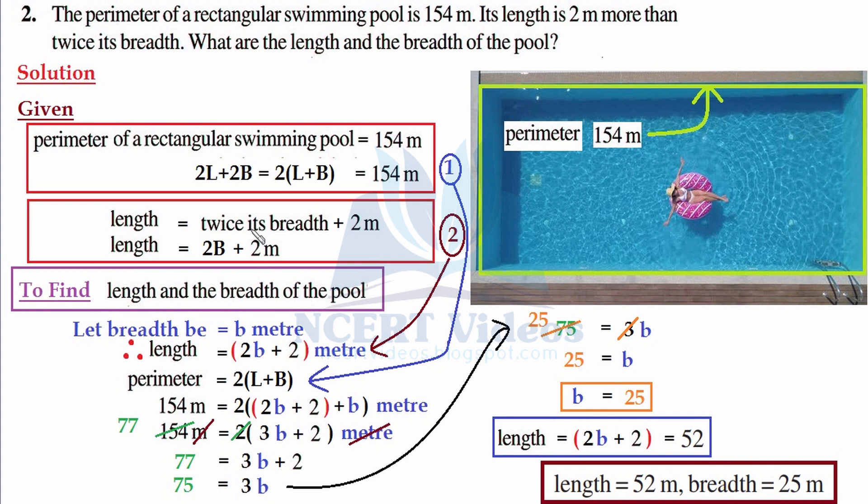Now we found length in terms of breadth: that was twice of breadth plus 2 meters. So we just wrote it within brackets so that we don't get puzzled. So length is twice of breadth plus 2.